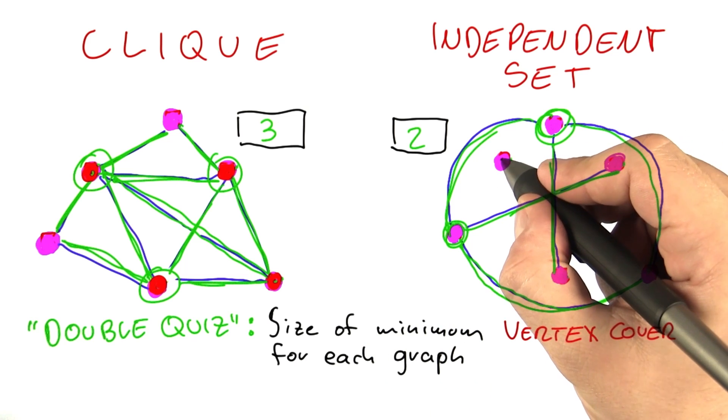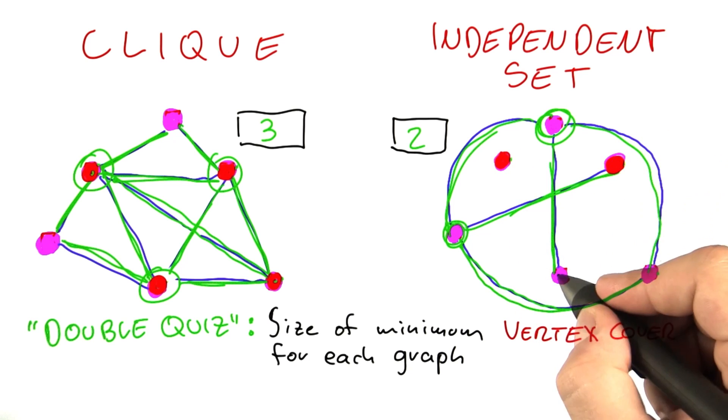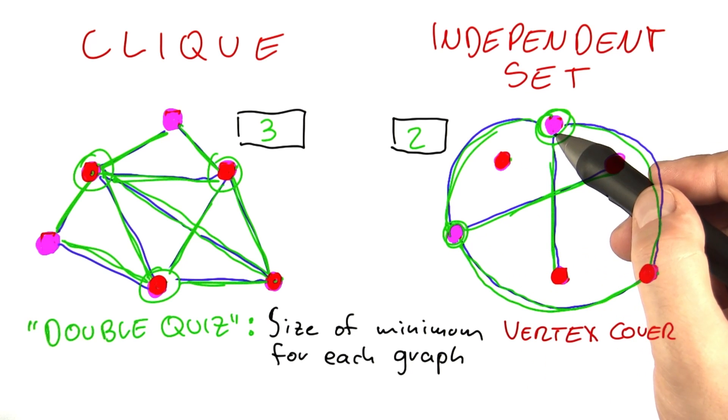This one over here, however, is more interesting. Because in the largest possible independent set, we had those four here. So it could seem like vertex cover, those two green vertices here.